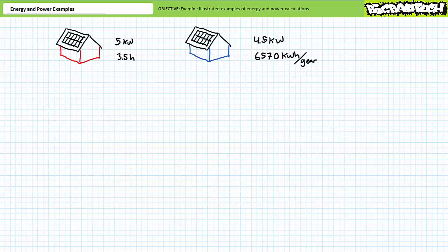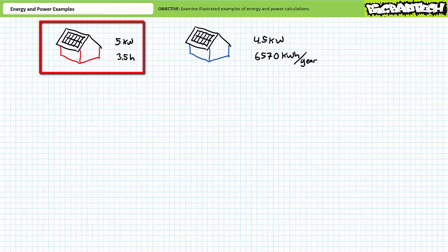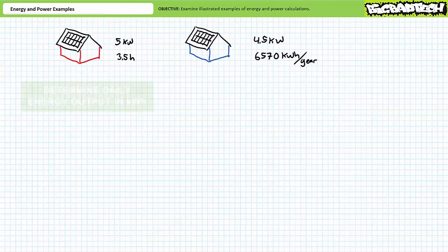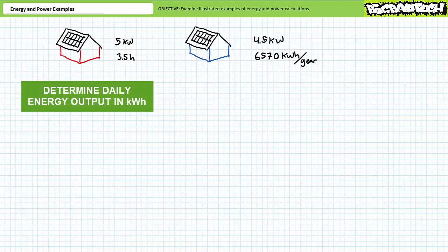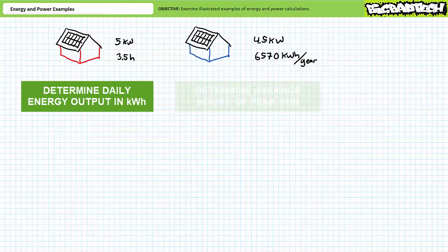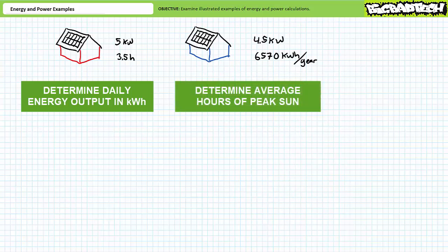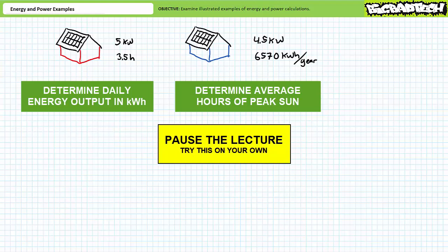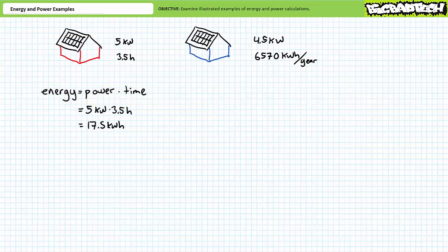Let's put your understanding of peak sun hours to the test. Consider a five kilowatt array installed in an area known to regularly experience 3.5 hours of peak sun each day. Determine how much energy this array will produce each day on average. Energy is power times time: five kilowatts times 3.5 hours yields an average daily energy output of 17.5 kilowatt hours.